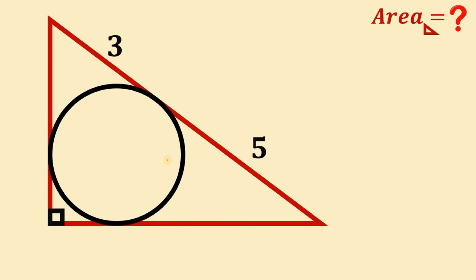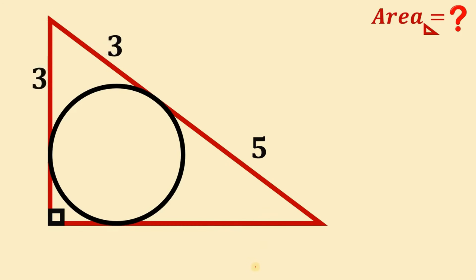To answer this question, we will use some laws of tangents. Take note: from the point of tangency and the point outside the circle, these two tangent lines are said to be equal. So if this segment is 3, the other segment must also be equal to 3. Also, if this length is 5, then the other segment must also be equal to 5. So this side is 3, and this segment is also 5.